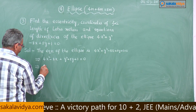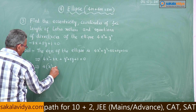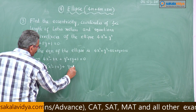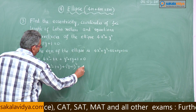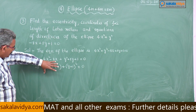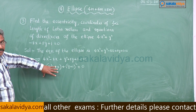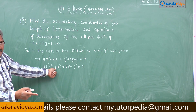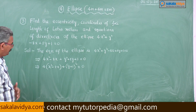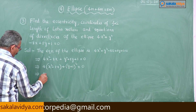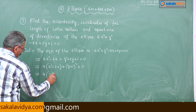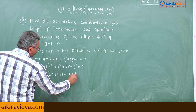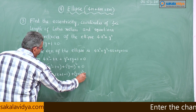From the first two terms, take 4 common: 4(x² - 2x) + (y + 1)² = 0. The expression x² - 2x is an incomplete square. We complete it: half of the x coefficient is 1, so we add and subtract 1² inside the bracket.